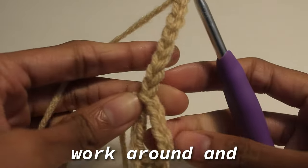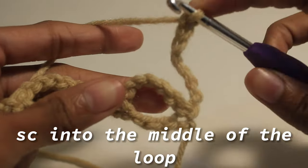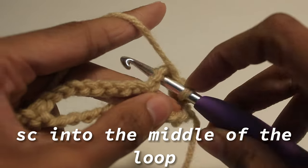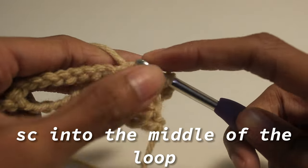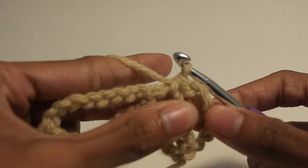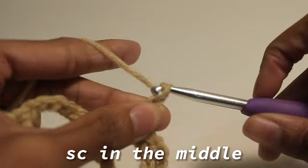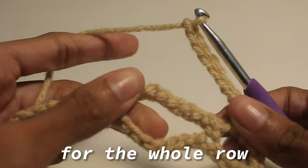Then flip your work around and single crochet into the middle of the loop. Now repeat that by chaining eight and single crocheting in the middle for the whole row.